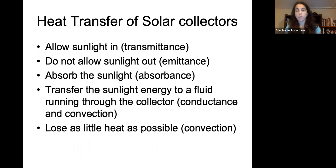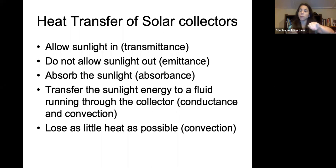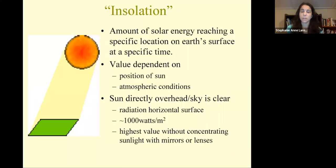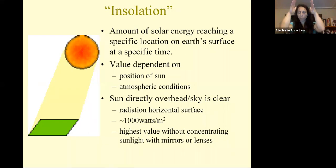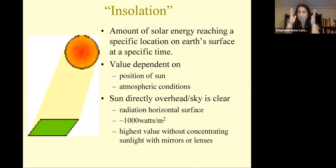Solar collectors allow sunlight in but do not allow heat out — they absorb sunlight and transfer that energy to a fluid running through the collector using both conduction and convection. The idea is to lose as little heat as possible. When the sun is directly overhead and the sky is clear, radiation is about 1,000 watts per meter squared — this is the highest average value we can get without mirrors or lenses.